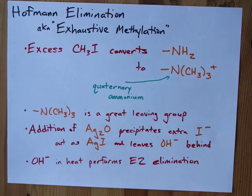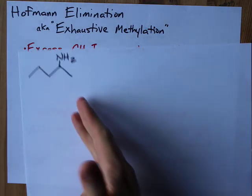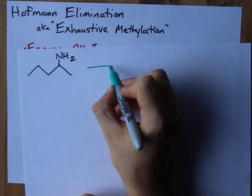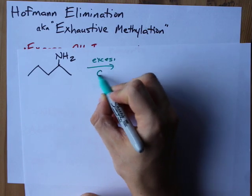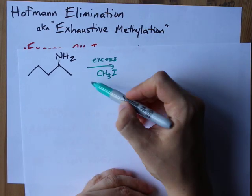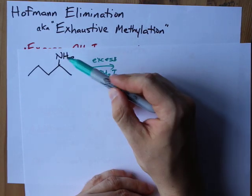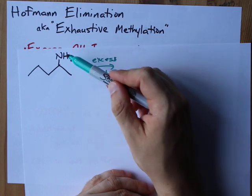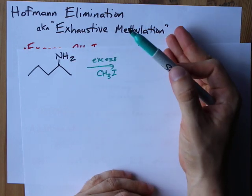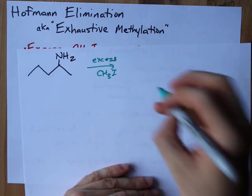Let's do this for 2-pentyl amine. Step 1 is to add excess CH3I. You need excess because you need to do three different additions or combinations of these methyl groups onto the nitrogen.